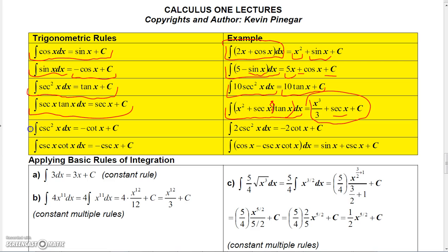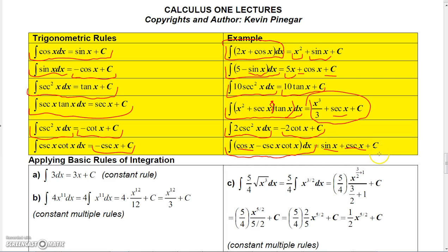Since the derivative of cotangent is minus cosecant squared x, the integral of cosecant squared x equals minus cotangent x plus a constant. Integrating 2 cosecant squared x dx gives minus 2 cotangent x plus a constant. Also, since the derivative of cosecant x is minus cosecant x · cotangent x, integrating cosecant x · cotangent x gives minus cosecant x plus a constant. For cosine x minus cosecant x · cotangent x dx, the result is sine x plus cosecant x plus a constant.